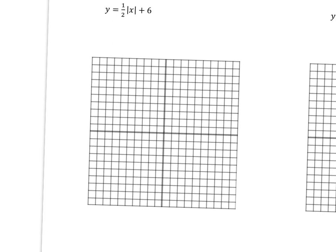The third example opens up. There's no left or right shift, but it shifts up 6. This is a vertical shrink with a slope of one-half. Starting at the vertex up 6, go up 1, right 2, up 1, right 2 — and mirror it to the left. The result is a wider V-shape.